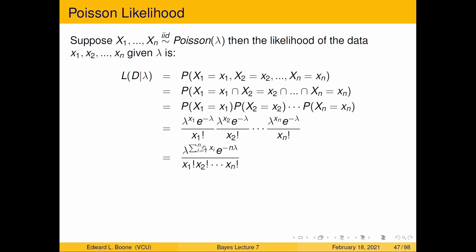Putting it together, we get lambda to the power of the sum of the xi, times e to the minus n*lambda, over x1-factorial times x2-factorial dot dot dot xn-factorial — all multiplied together. This can be a massive number, so don't panic. This is the likelihood piece we need to find the posterior distribution.